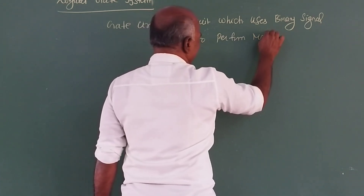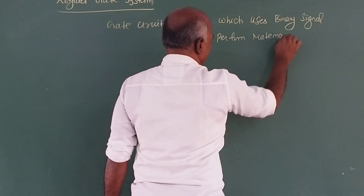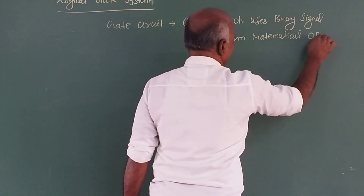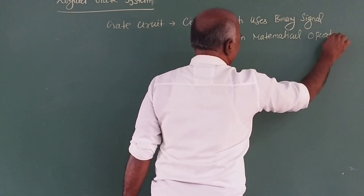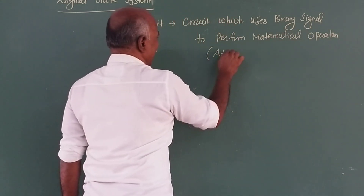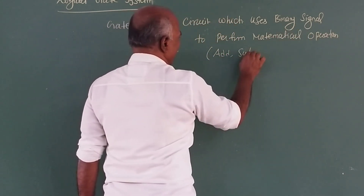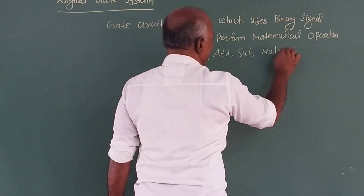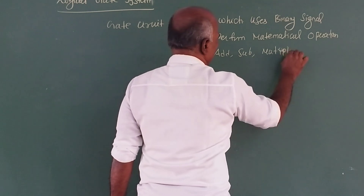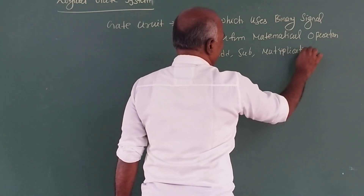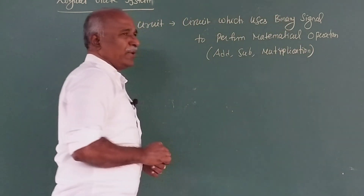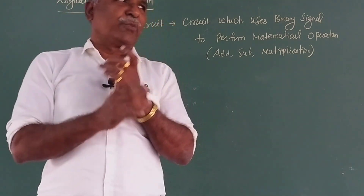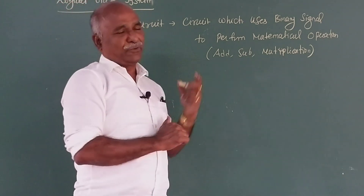Therefore, in digital electronics, basically in the gate circuit, the mathematical operations such as addition, multiplication, addition or subtraction are performed. This operation is done using binary signals, and numbers are used upon the mathematical operation. For example, it is called gate circuits.